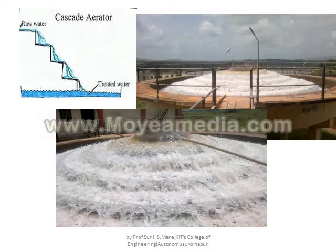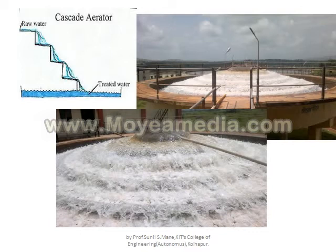Whenever water falls from one end to the other, at the lower end the water is properly exposed to air, giving us aerated water. You can see raw water falling, forming a thin film, and treated water is collected at the bottom. An additional advantage of the cascade aerator is that metallic substances dissolved in the water also get precipitated when water contacts the steps.